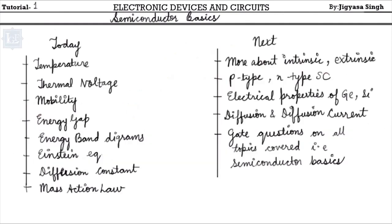Today we covered temperature, thermal voltage, mobility, energy gap, energy band diagrams, the Einstein equation, diffusion constant, and the mass action law — all in a compact way. In the next lecture, we'll study these topics in more detail, covering intrinsic and extrinsic semiconductors, P-type and N-type classification, electrical properties of germanium and silicon, diffusion and diffusion current, along with GATE questions on all these topics. Stay tuned and keep studying.